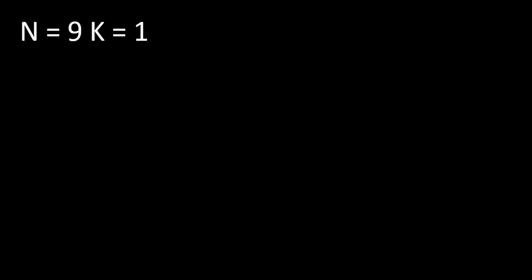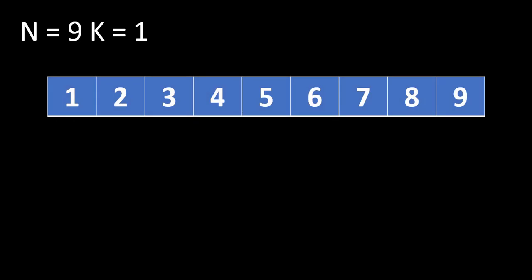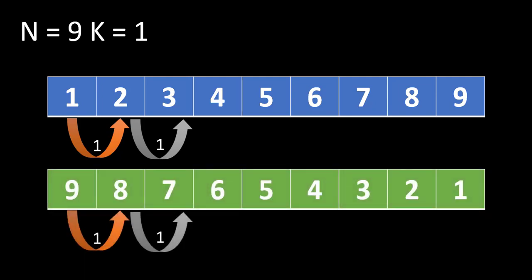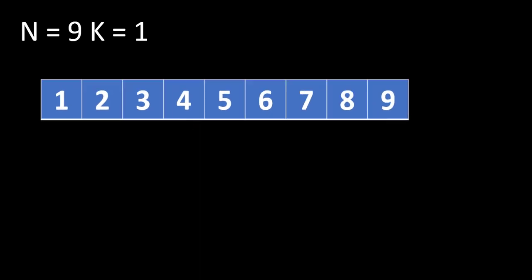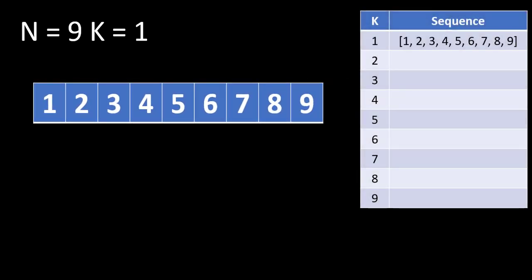We'll start off with k is equal to 1. We'll first write all values 1 to n — that is 1 to 9 — in an increasing sequence. When we apply the logic of finding the absolute difference with the previous number in the array, we find that all the numbers give an absolute difference of 1, thus making one distinct integer in the resultant list. We can also write this list in decreasing fashion and the answer still remains the same. We put this value into our sequence table against k equals to 1.